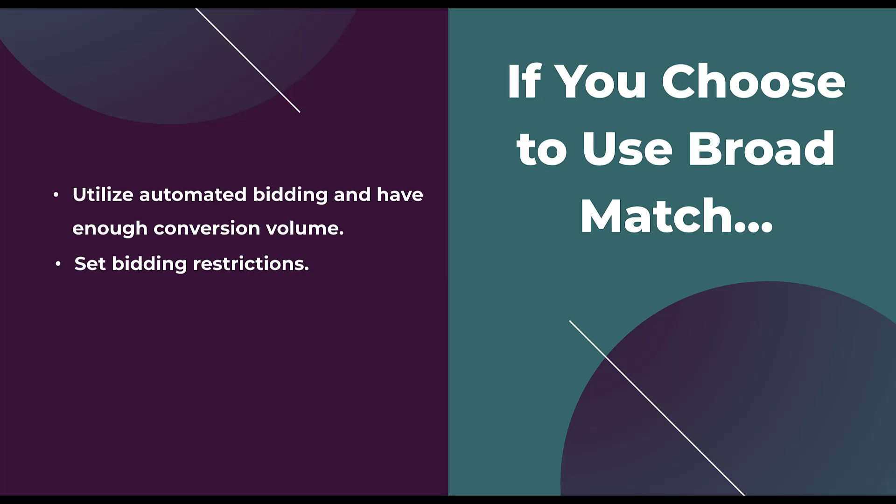The next suggestion for setup is to utilize automated bidding strategies, as Google recommended. Manual or enhanced CPC bidding can already be relatively difficult and requires a decent amount of manual input and regular reviews to keep things trending in the right direction. If you're not going to be hyper-vigilant with a set of rules in place, it's probably better to let the machines handle it. But with automated bidding, you need to make sure you have enough conversion volume on the action you want these keywords to generate. If you're using broad match with automated bidding and you only average one conversion per month, this probably isn't the right option for you — automated bidding does best when it has a lot of data.